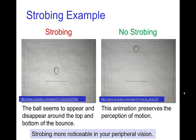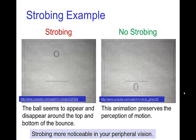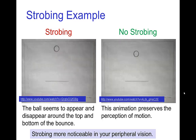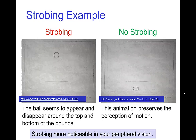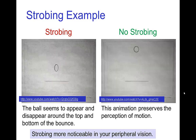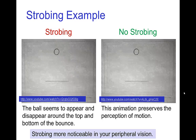Here are some examples where the case on the left doesn't have enough images, and especially near the bottom the ball seems to disappear and reappear. Whereas on the right, with more frames showing the ball in motion, it preserves the perception of motion. Strobing is more noticeable in your peripheral vision, so if you turn your head and watch from the side, the strobing is even more noticeable.